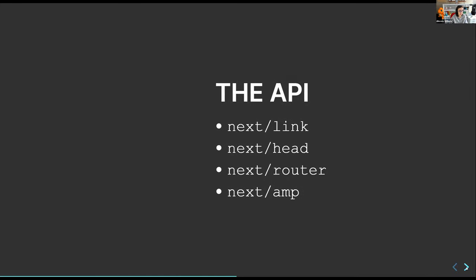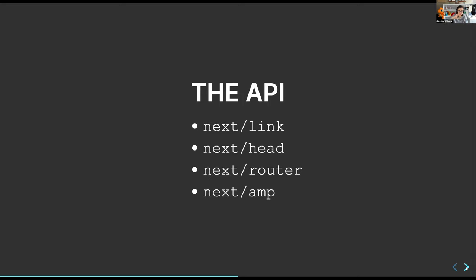The Next.js API has four main components. Next Link is a glorified anchor tag that wraps links for client-side transitions and preloading. Next Head is a React component for the HTML head, letting you programmatically change titles and meta tags. Next Router is a React hook for query parameters, current path, redirects, and navigation. And Next Amp lets you generate Google AMP pages — the Google team actually worked with them on that.